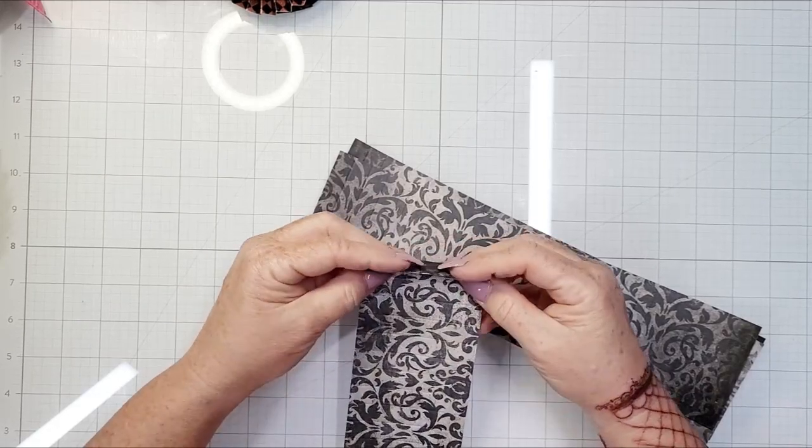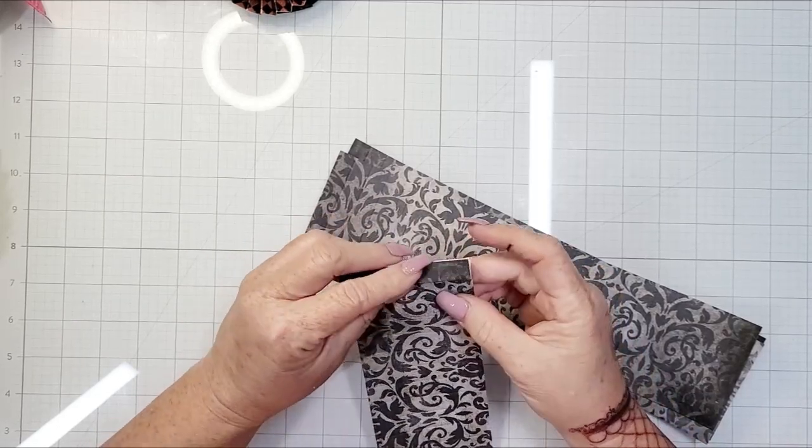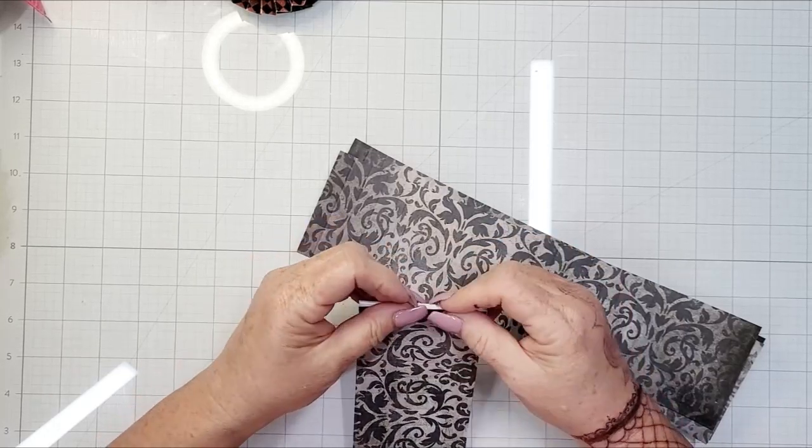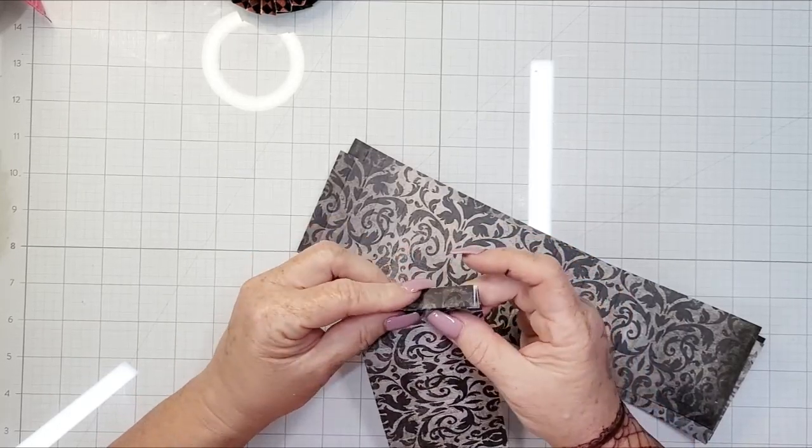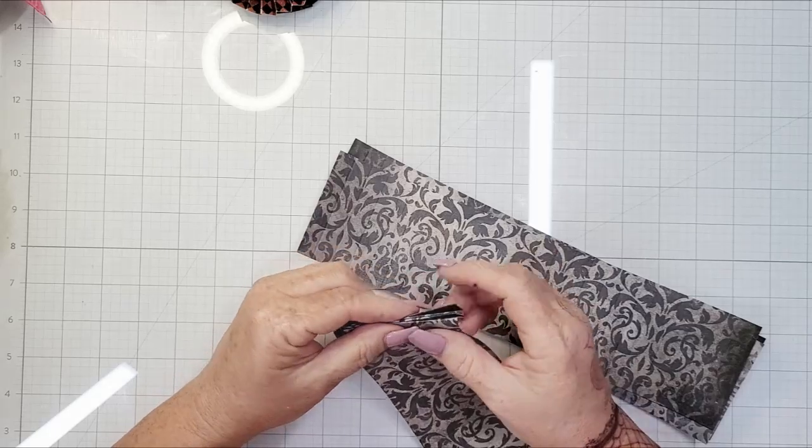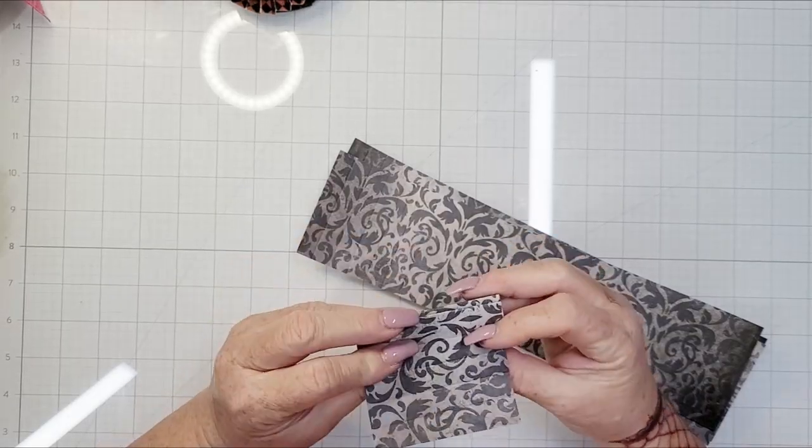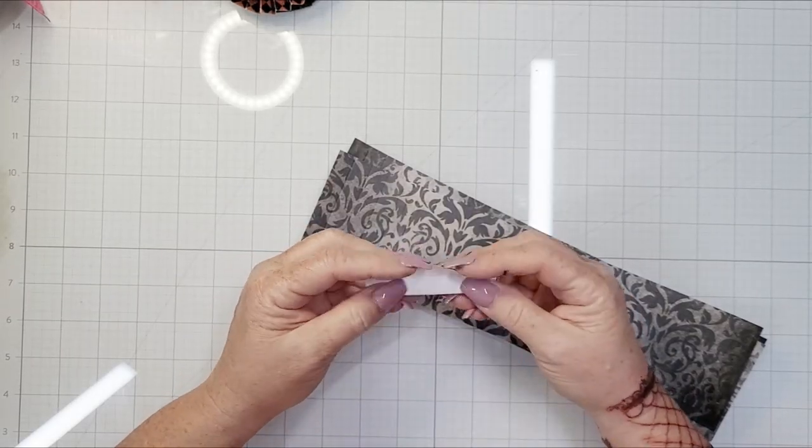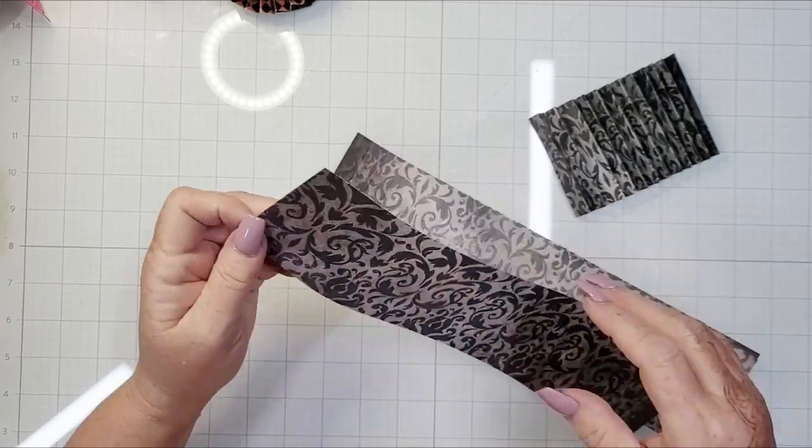With those scores, now let me back up and say you do not have to score it. However, it makes this part of the process so much easier. You are doing a simple accordion fold back and forth the entire length of each strip of paper.